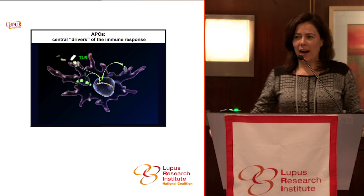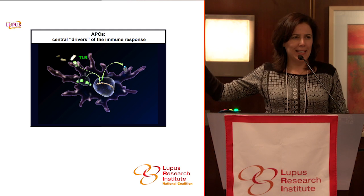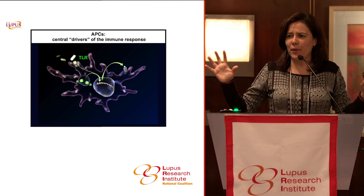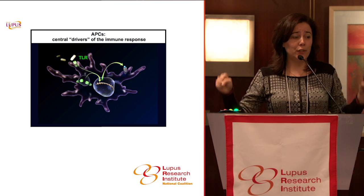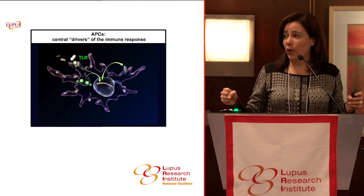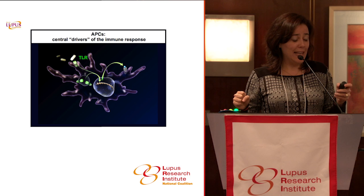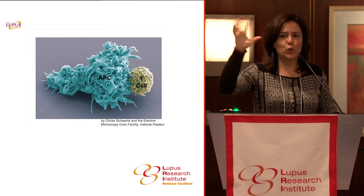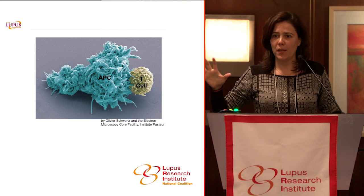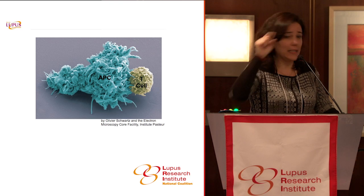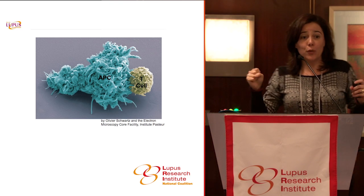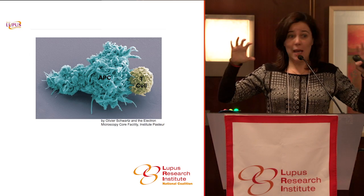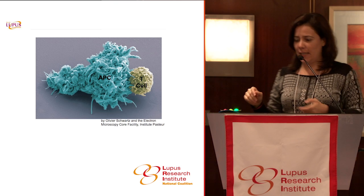These cells are known as antigen-presenting cells, or APCs. Just remember they are the main drivers — they can turn on this car, they can turn on the immune response. They can do that because they have the ability to recognize microbes. So if we get infected, these cells can tell our body we've been infected, because these cells have some proteins, some receptors, indicated in these cartoons.